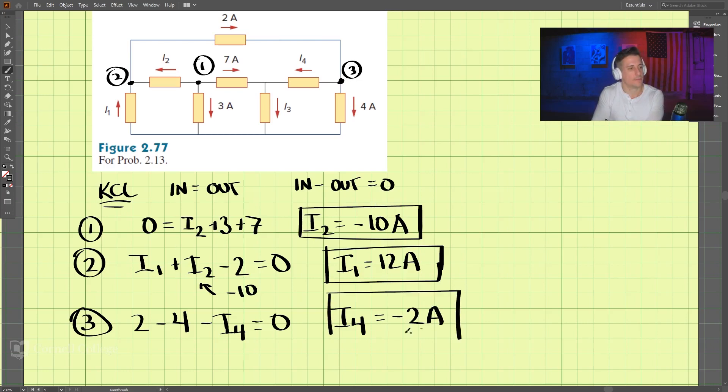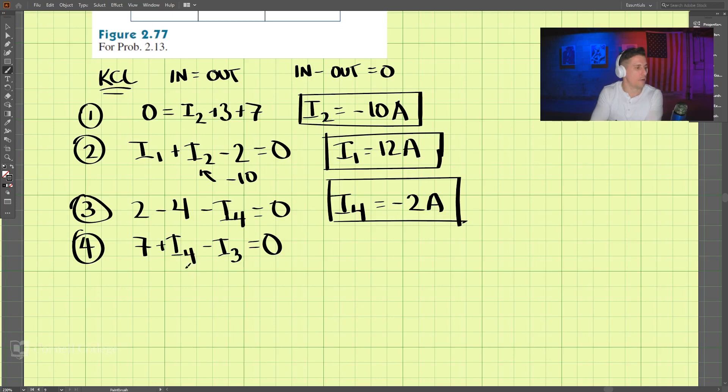And for this point. So we have in, we have 7, and plus I4 minus the out, which is I3. And that is 0, and we have I4. We put in negative 2 there. So we have 5, I3 is 5 amps.